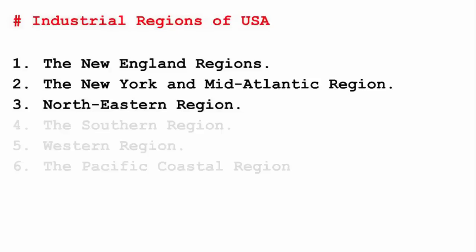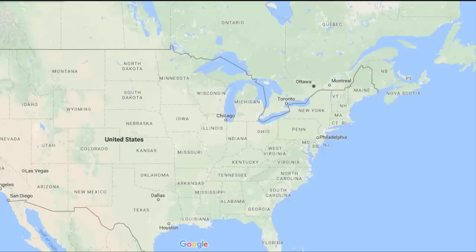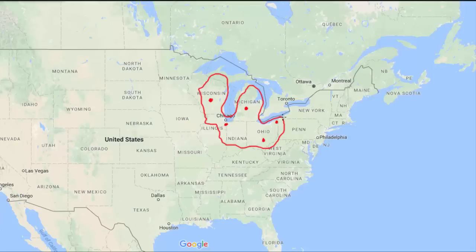The third region is the northeastern region, covering places like Pittsburgh, Cleveland, Detroit, Chicago, Ohio, Michigan, and Wisconsin. These places are located near a big lake in this region, and it is also called the Mid Lake region.